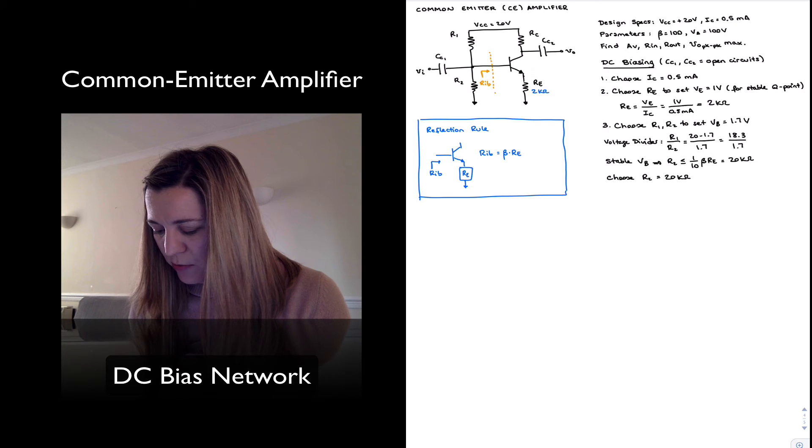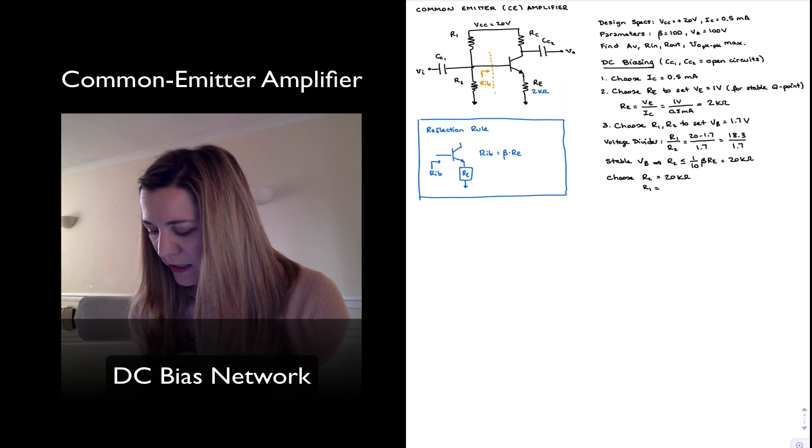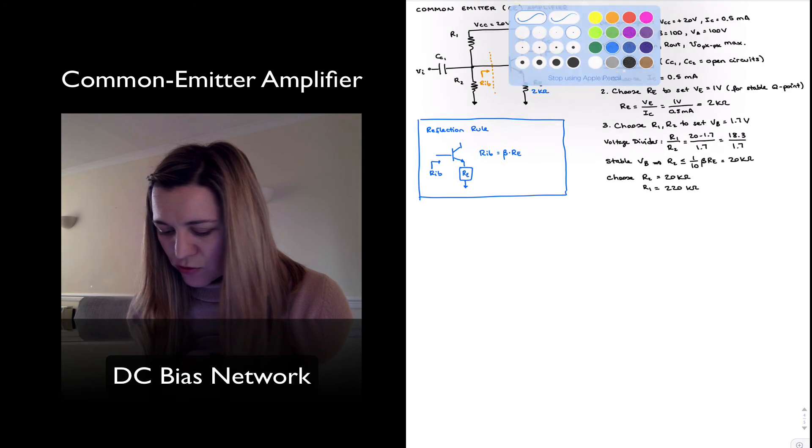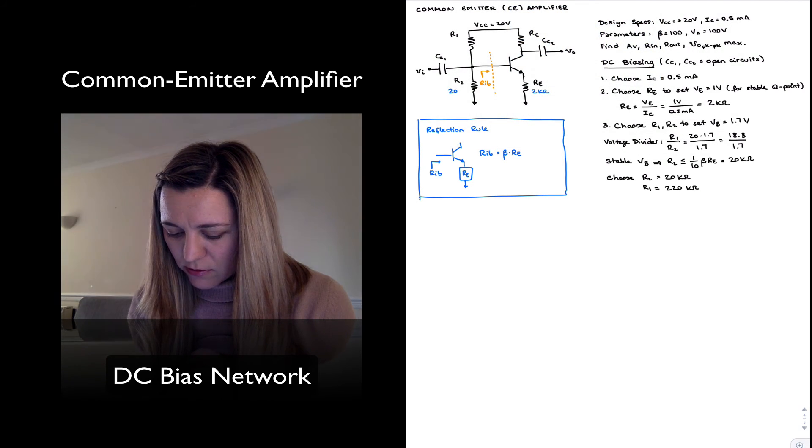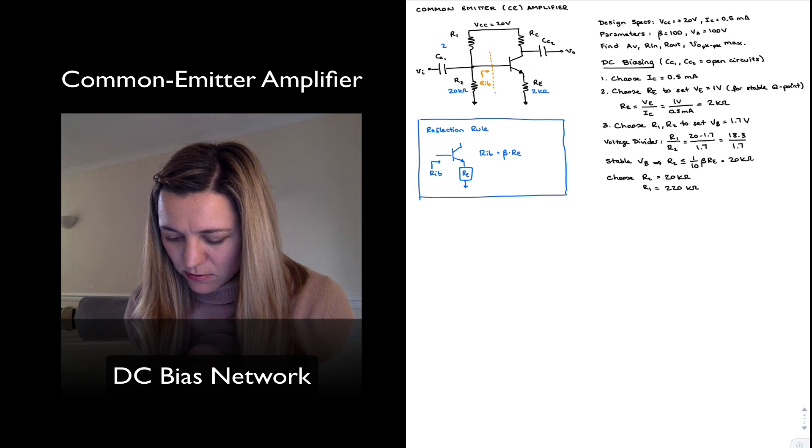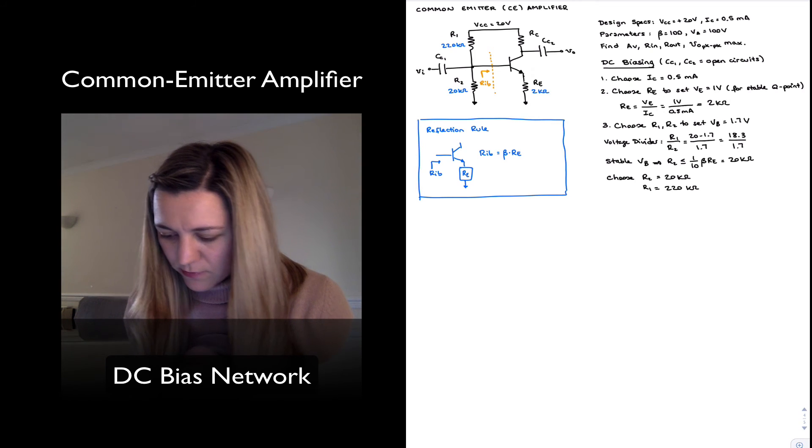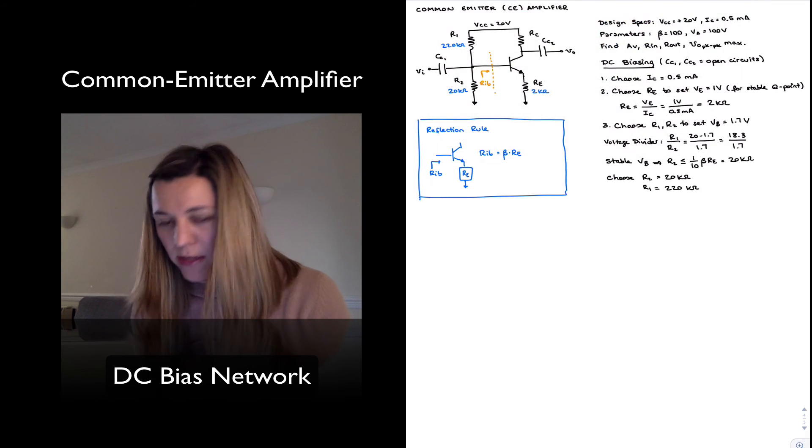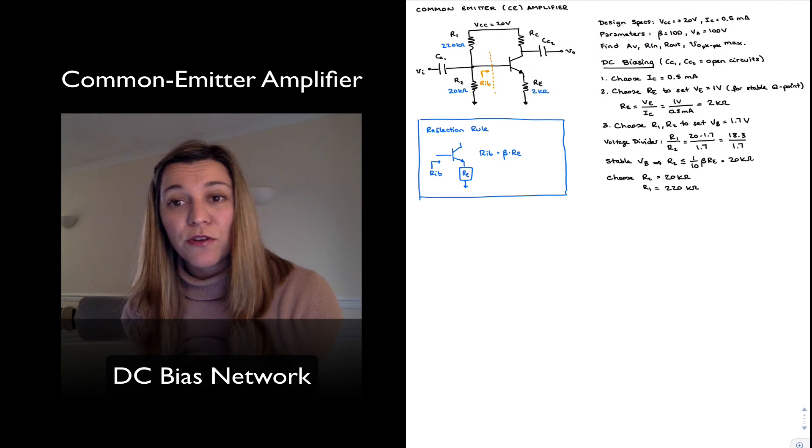And that implies that my R1 is then going to be 220 kilo ohms. So I can write those values in my circuit. All right. And one final step. We need to figure out the value of our RC.